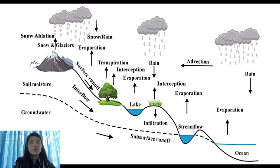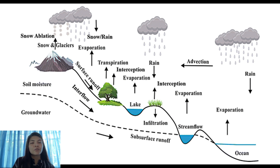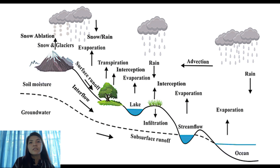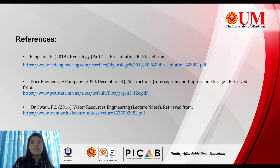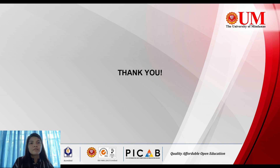So, we already know what evaporation, transpiration, interception, and depression storage are. Here in the diagram, we can see where the total losses from precipitation occur. From transpiration, interception, and depression storage — these are the water that does not reach surface runoff, as it simply evaporates. Next are the references, and that's all.